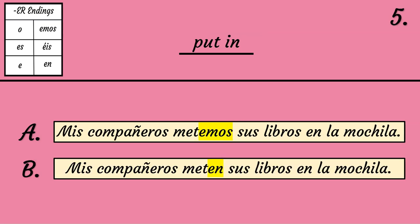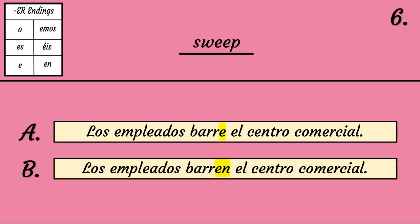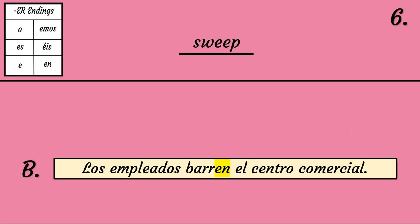What is the correct conjugating form? A. Metemos. B. Meten. The correct conjugating form is B. Meten — Mis compañeros meten sus libros en la mochila. What is the correct conjugating form? A. Barre. B. Barren. The correct conjugating form is B. Barren — Los empleados barren el centro comercial.